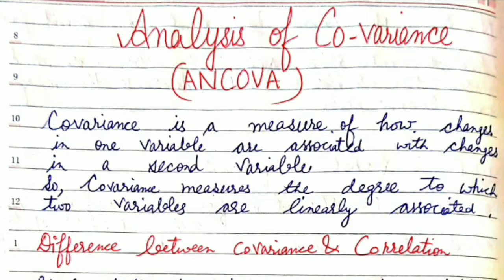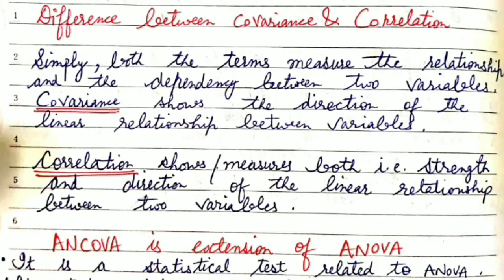Analysis of covariance, also called ANCOVA. For understanding ANCOVA, firstly we should understand what is covariance. Covariance is a measure of how changes in one variable are associated with changes in a second variable. Covariance measures the degree to which two variables are linearly associated or correlated.